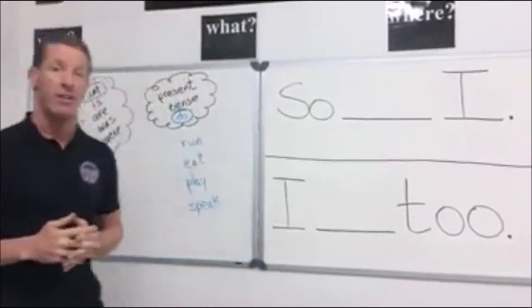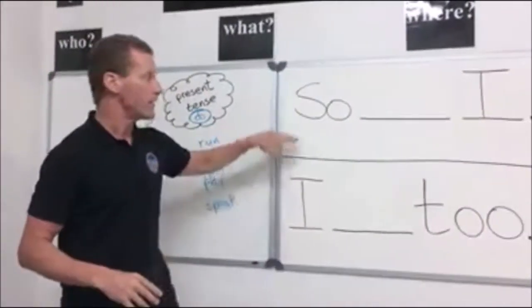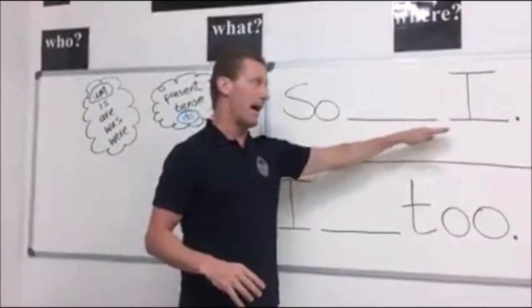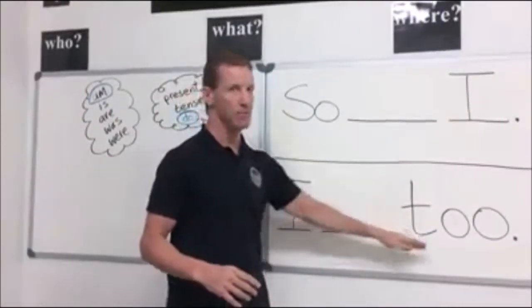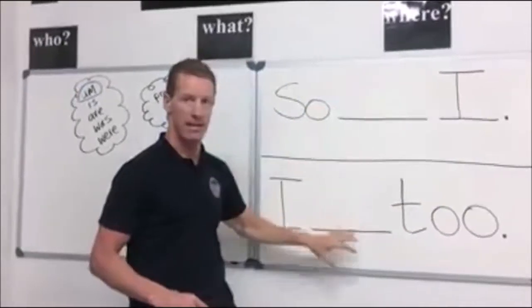So for example there are four ways you can use so and to. So blank I, I blank to. What goes in this space and this space.